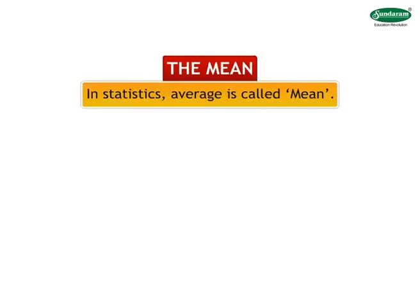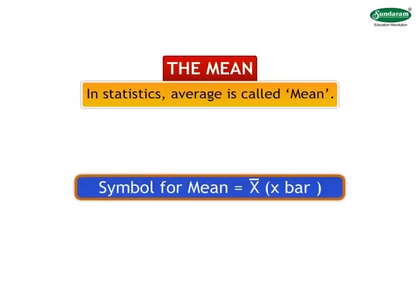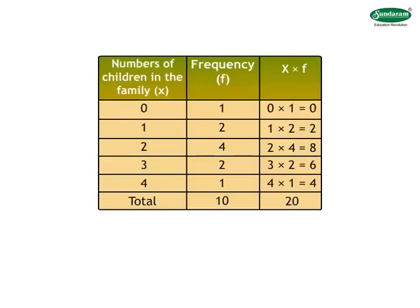The mean: We shall learn how to calculate the average scores. Average in statistics is called mean. It is denoted by the symbol x bar. Let us consider the example as shown on the screen. Let us take the number of children in the family as the first column. Second column is equal to frequency is equal to f. Third column is equal to x into f. Families with 0 children is equal to 1. Therefore, number of children in them is equal to 0 into 1, which is equal to 0.